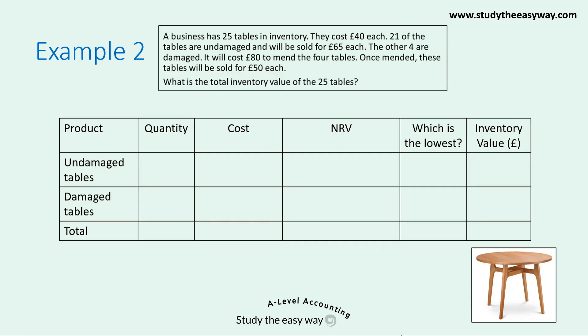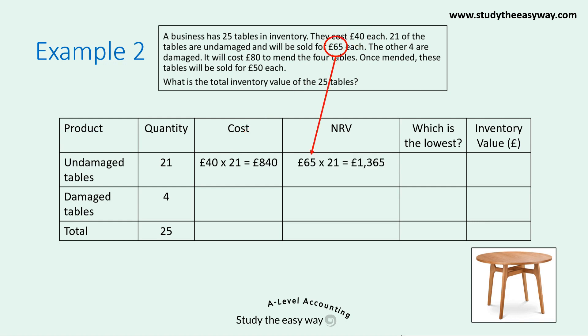I find it useful to use a table of information to calculate the inventory values in a question like this; otherwise it's quite easy to get into a muddle. To start with, we put in the quantities in the first column: 21 undamaged tables in the top row and four damaged tables in the second row, with a total of 25 tables. For the undamaged tables, each has a cost of £40 and there are 21 of them, giving a total cost of £840. For the net realisable value, the actual or estimated selling price is £65, multiplied by 21, giving a total of £1,365. Comparing cost to net realisable value, the cost is the lower of the two, so the inventory value of the 21 undamaged tables is £840.